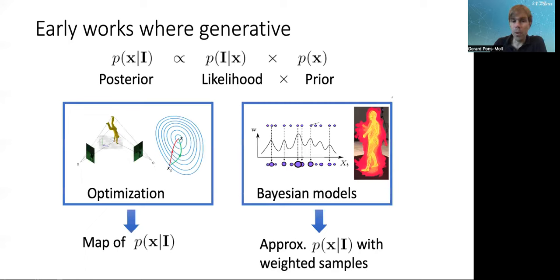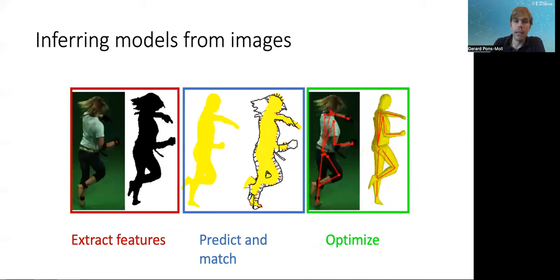In terms of techniques, the earlier works were mostly based on optimization, techniques based on taking gradients or second-order methods or based on particle-based optimization. This is basically approximating the posterior based on a set of samples. Every sample is a hypothesis for the pose or shape parameters x. Those samples are weighted according to how likely the sample is.